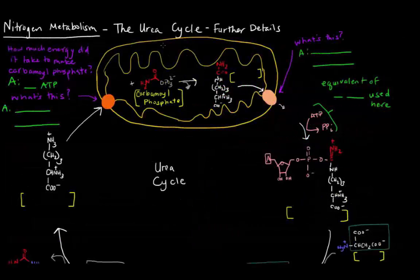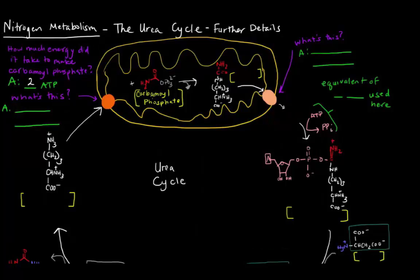In this video, I want to talk about the urea cycle in more detail. In the last video, we talked about how we created carbamoyl phosphate, which started off this cycle. That cost us two ATPs to actually make carbamoyl phosphate. The carbamoyl phosphate is in the mitochondrial matrix of a liver cell.